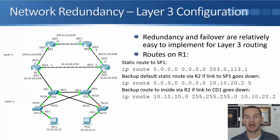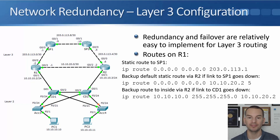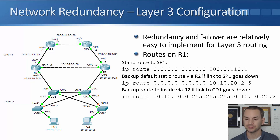On R2, we've got a similar configuration where its preferred route up to the internet goes up to SP2. It's directly connected to core distribution two for downstream traffic. And if either of those links goes down, it will failover to R1. You see the configuration on the slide here — we covered it in the last lecture, and it was quite simple.